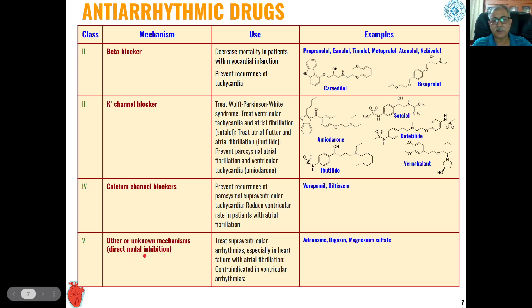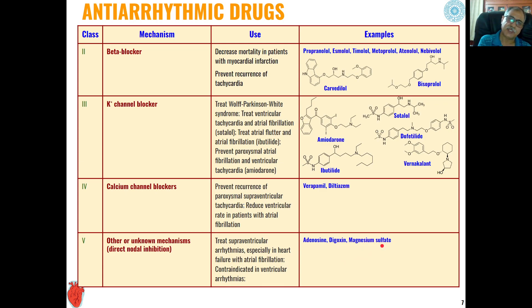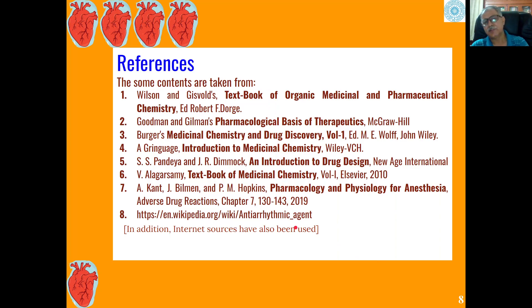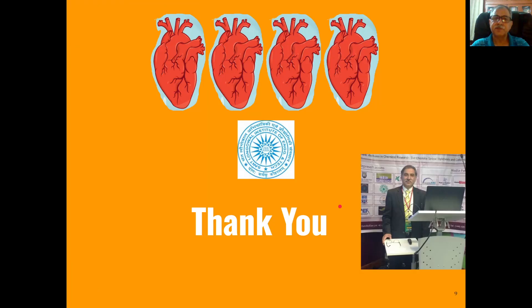The fifth class of anti-arrhythmic agents acts via atrioventricular nodal inhibition through an unknown mechanism. Adenosine, digoxin, and magnesium sulfate are the most commonly used agents in this category. They are used for treatment of supraventricular arrhythmias, especially in heart failure with atrial fibrillation, and are contraindicated in ventricular arrhythmia. The structures of these agents were discussed in lecture one.